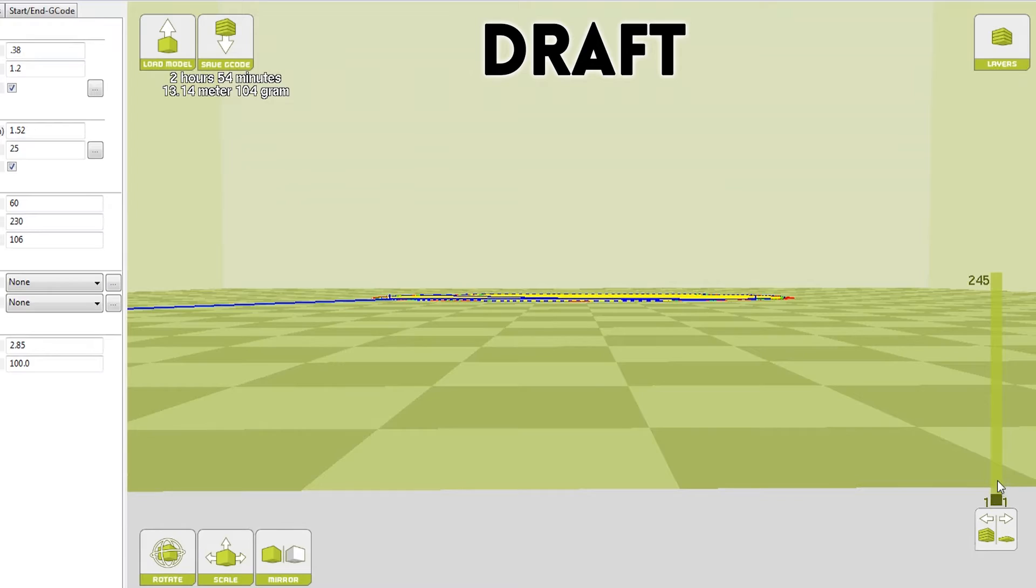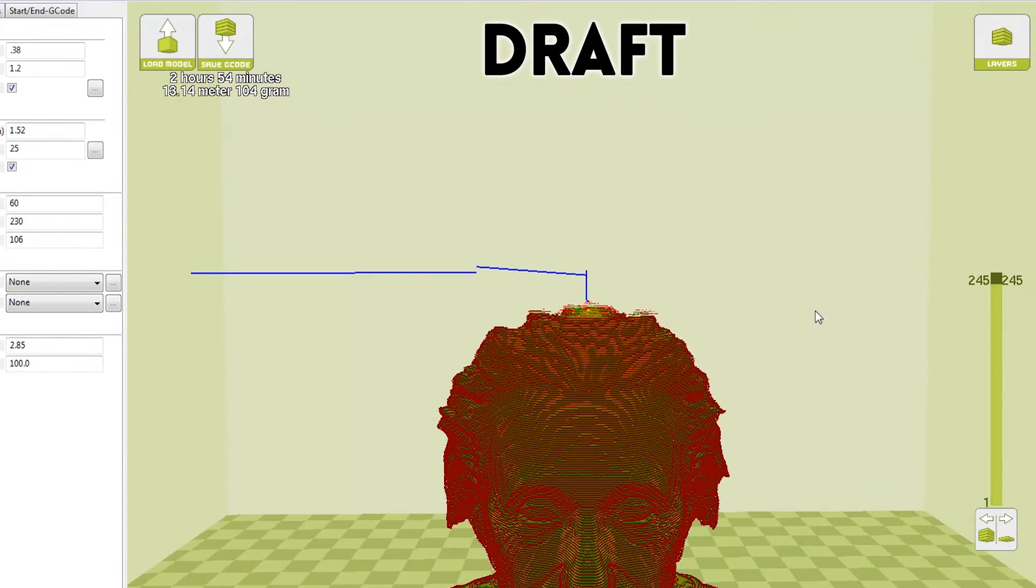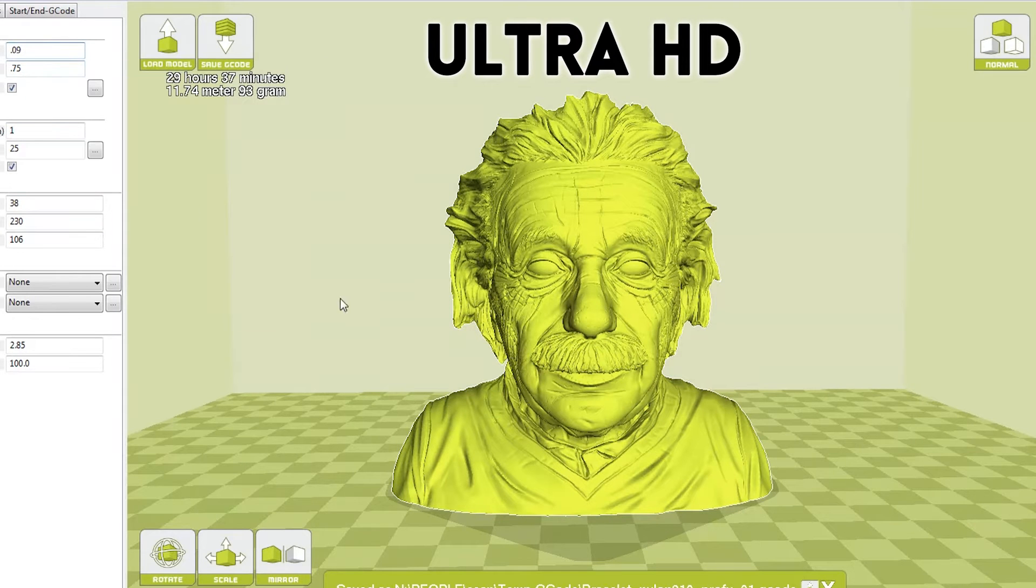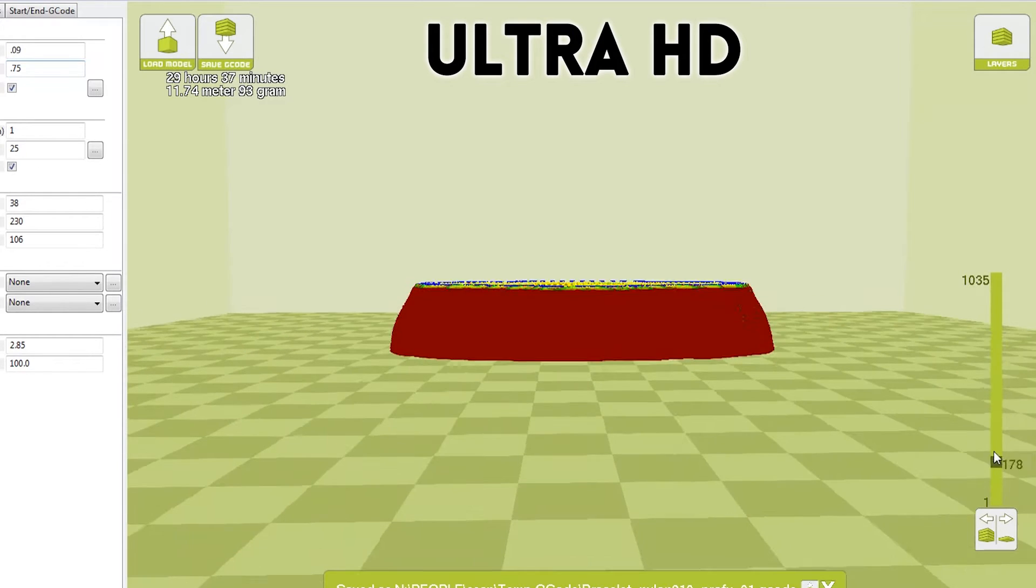This means that the printer will not print any detail in the Z direction that is thinner than this. Standard has layer heights of 0.25mm, fine 0.1mm, and Ultra HD 0.09mm, or 90 microns.